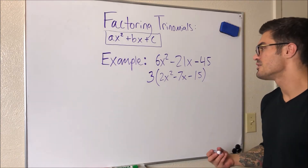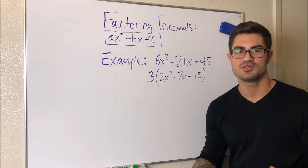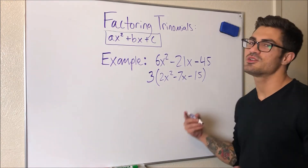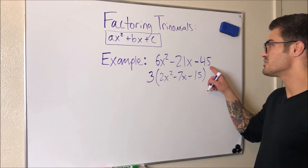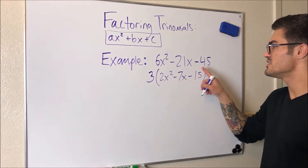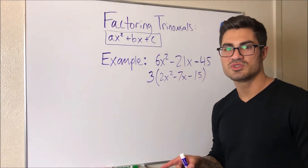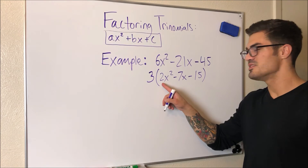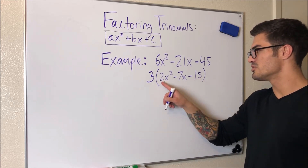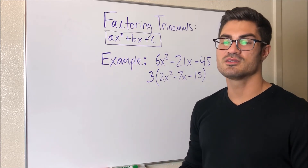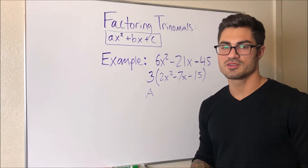Now I have 3 times a trinomial, but A is still not equal to 1, so I still can't use the simple method — I still have to use the AC method. Factoring out the 3 did make this easier though. Look what would have happened if I had to use the AC method on the original: A times C would be 6 times 45 — that's 270, a pretty big number with lots of factors to check. In this case, my A and C are 2 times 15, so I only have to look at things that multiply to give us 30. That's why you always pull out a common factor — it makes your life a lot easier.